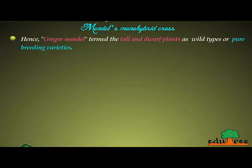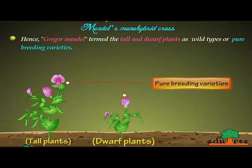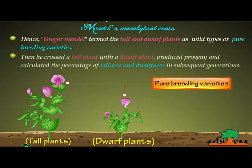Hence, Gregor Mendel termed the tall and dwarf plants as wild type or pure breeding varieties. Then he crossed a tall plant with a dwarf plant, produced progeny, and calculated the percentage of tallness and dwarfness in subsequent generations.